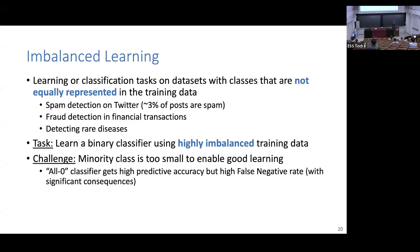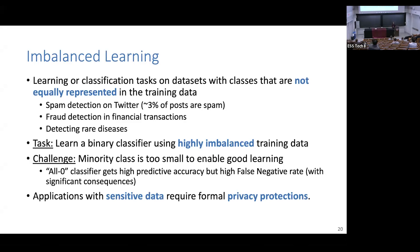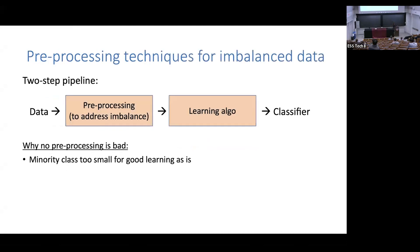The problem is that if you didn't account for imbalance at all, a classifier saying all-zero all the time gives very high prediction accuracy — but it misses the most important thing you're trying to unpack. And of course, if you're doing this with online behavior, finance, or healthcare data, you want to think about how to introduce privacy. This problem has been thought about outside of privacy a lot.